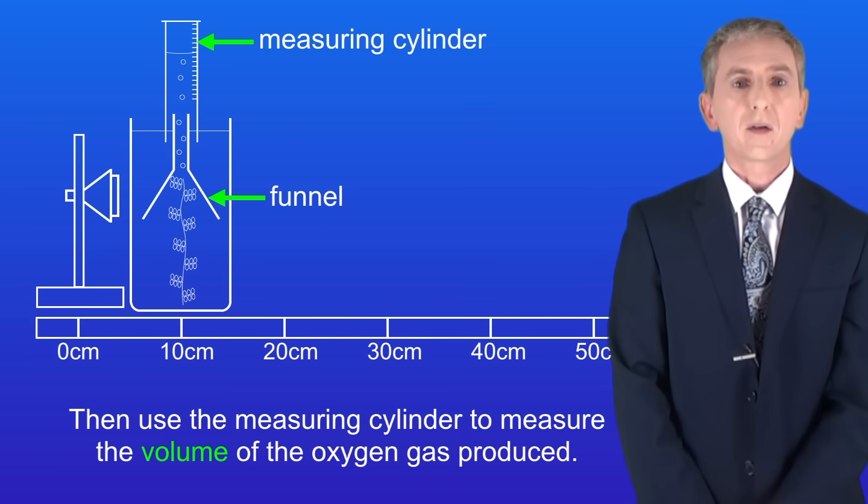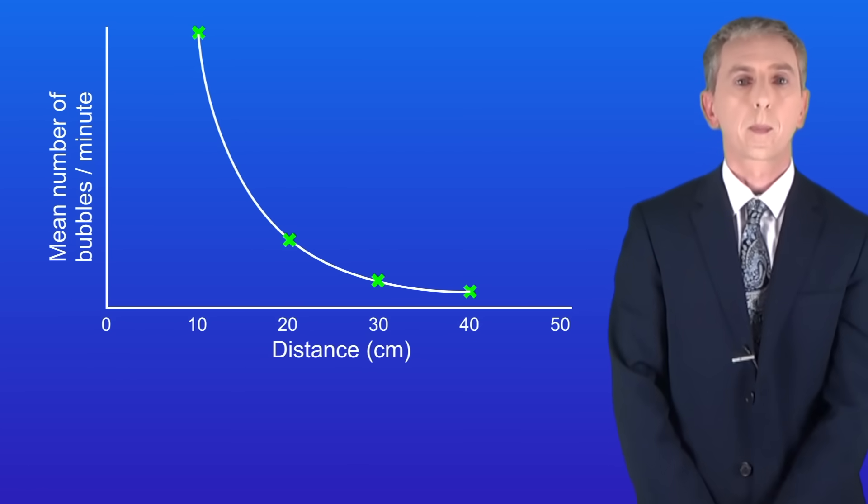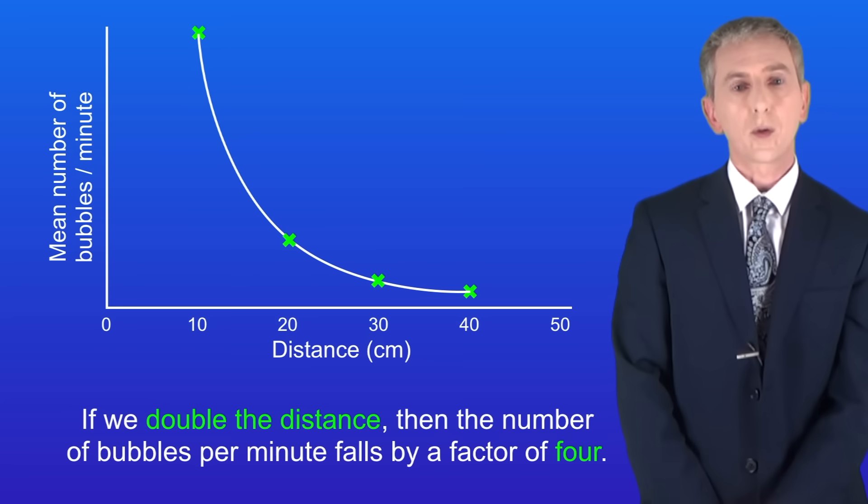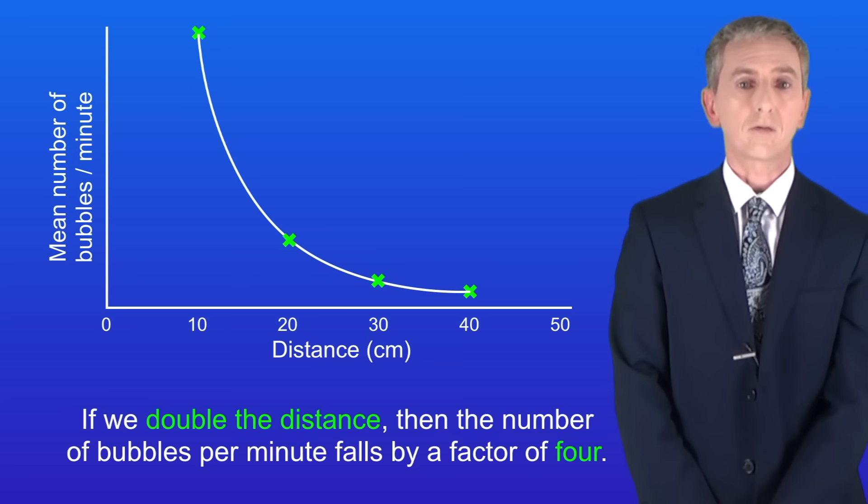If we plot the mean number of bubbles per minute or the volume of oxygen per minute against the distance from the lamp to the pondweed we get this graph. The key point is that if we double the distance the number of bubbles per minute falls by a factor of four.